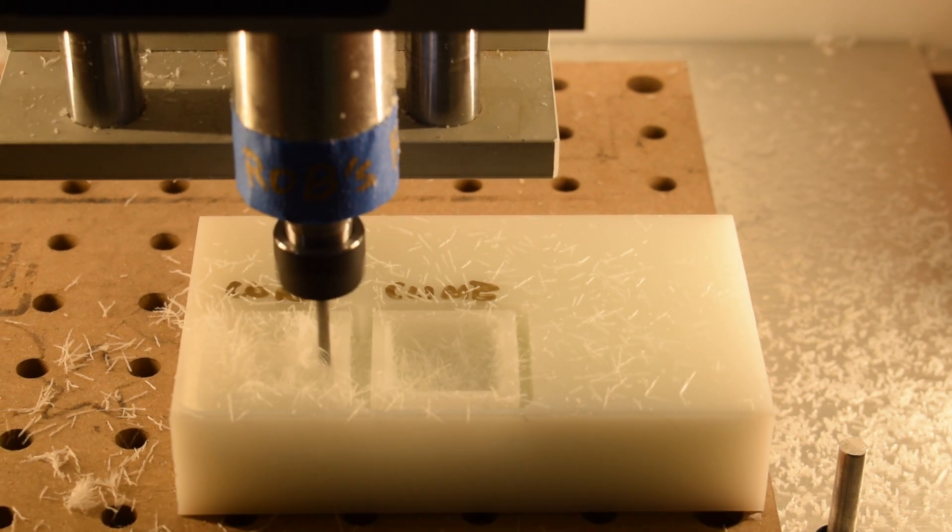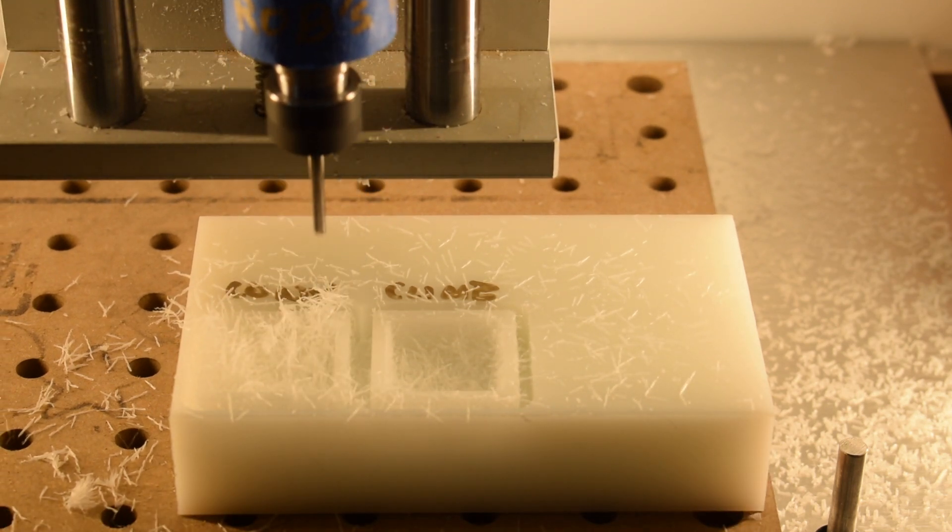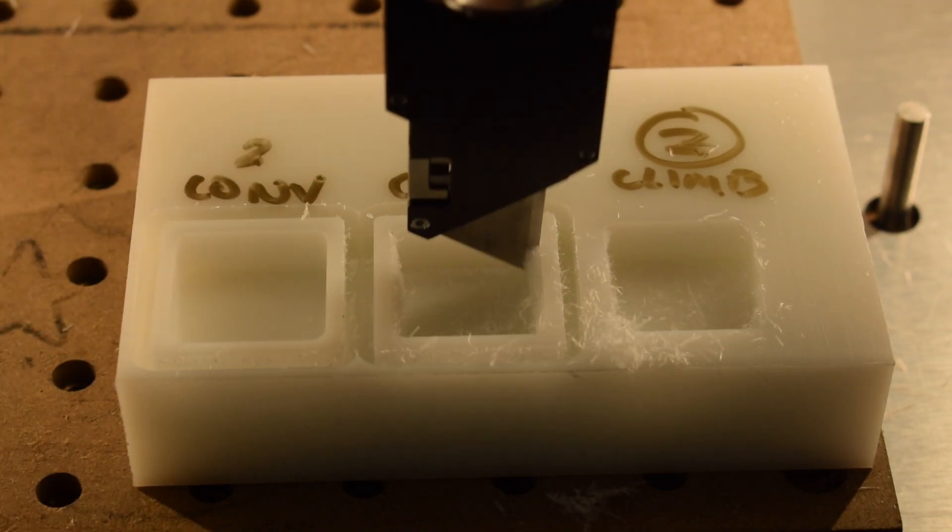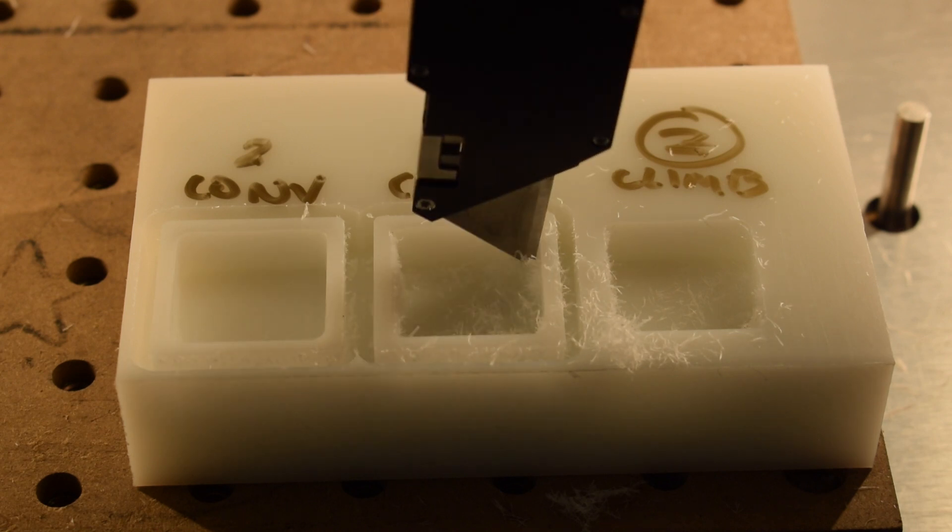Here, I'm taking a 2 thou per tooth or 40 inches per minute finishing pass at the full depth of my pocket, which is 3 eighths of an inch. And as you can see here, the walls finished with conventional cutting have much less cleanup needed than the ones finished in climb.